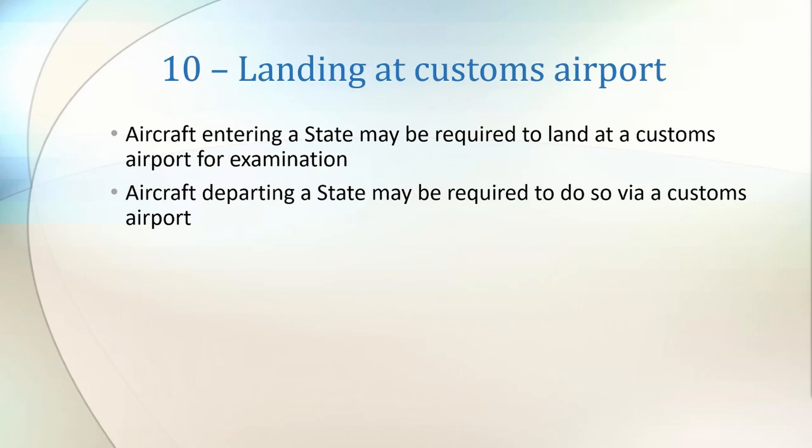Article 10 covers international customs. While a state is not required to implement customs airports, Article 10 states that any aircraft not protected by other articles may be required to land at a customs airport when entering a state's territory for examination. Additionally, on departure, a state may also require an aircraft to land at a departure customs airport.